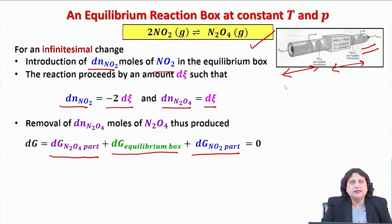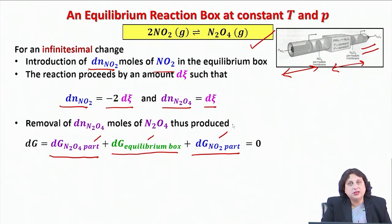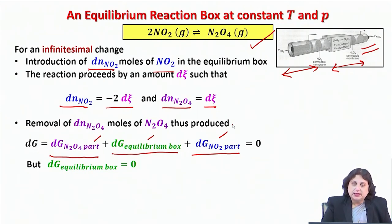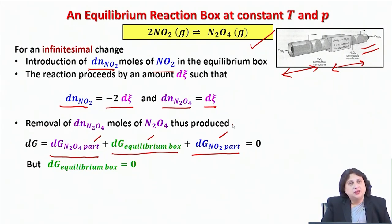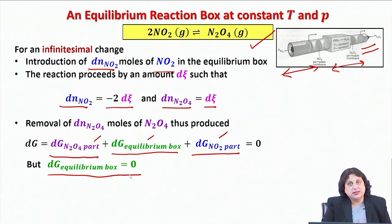If the system is still at equilibrium, then the overall change in Gibbs free energy at this given temperature and pressure must be equal to 0, and therefore a sum of these three quantities must be equal to 0. But I already understand that within the equilibrium box, there is no change in temperature, no change in pressure, and by the design of the experiment, there is no change in the composition of the equilibrium mixture. Therefore, I must have within this equilibrium box dG = 0.